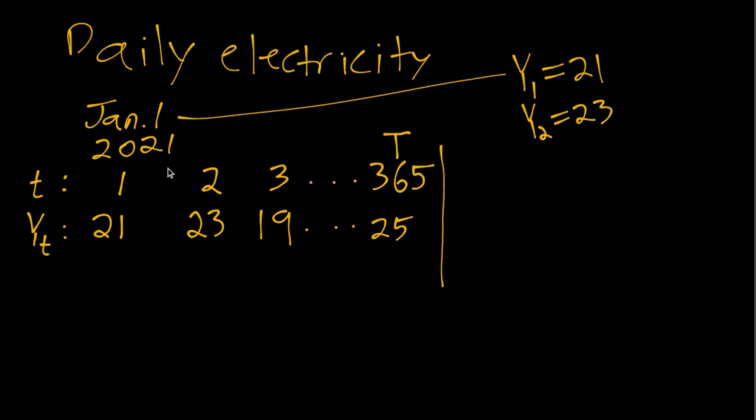So that means our y capital T equals y 365 which equals 25.